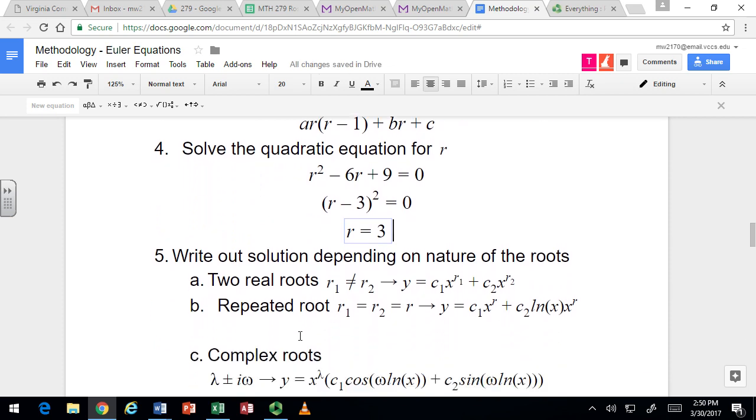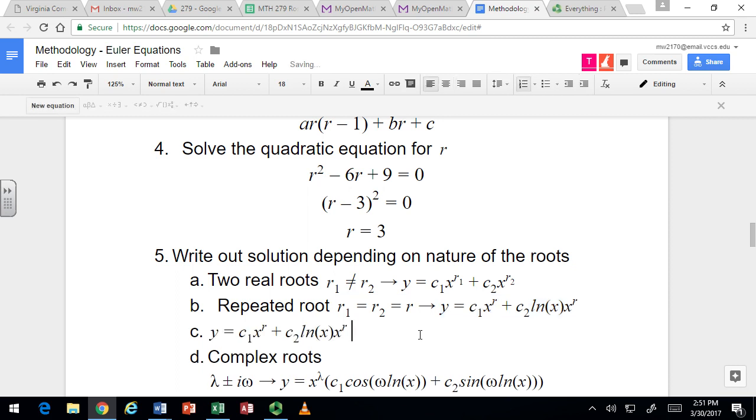But again, we talked about how second order differential equations need two linearly independent solutions for that fundamental solution set. And here's the formula for how you take that one r value and end up getting two. In the past with the exponentials for the constant coefficient problem, we just multiplied by x. But because of the weird stuff going on here with changing from e to the x to x to the r, we're actually going to multiply by a natural log of x.